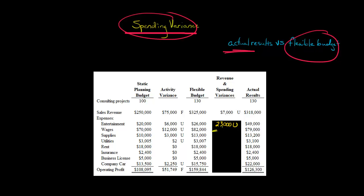For wages, we should have spent $82,000 per the flexible budget, but we only spent $79,000 actual. So that's actually a favorable variance of $3,000 — I'll mark that with an F for favorable.